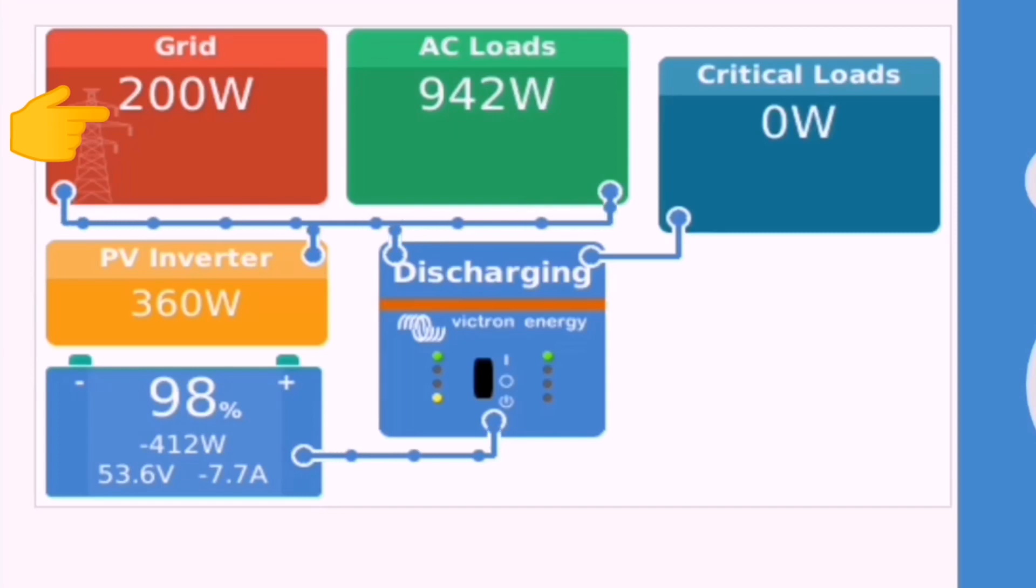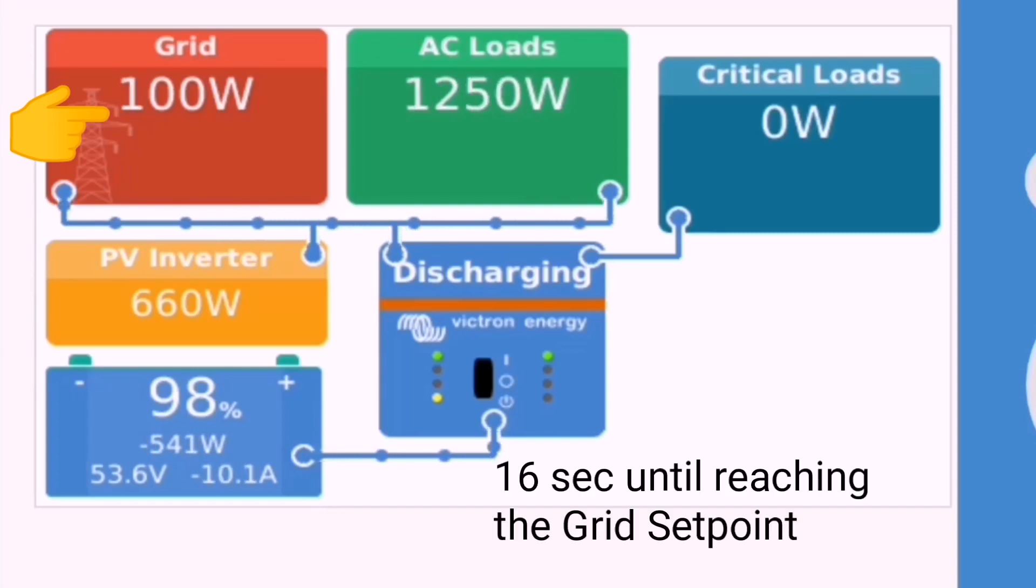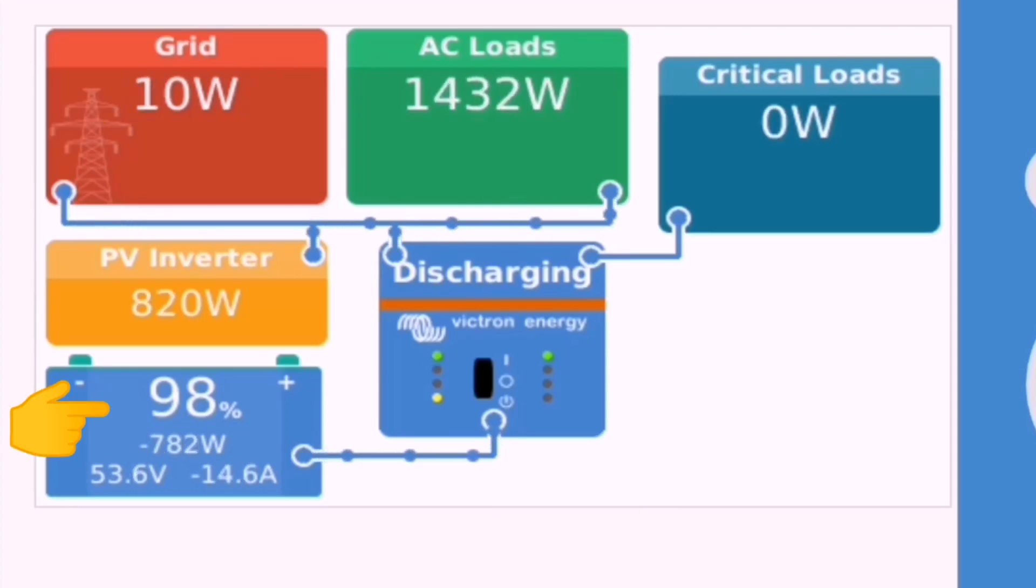What we can see here is it starts at the 700 watts and then gradually reduces down and takes 16 seconds to get to the grid setpoint of minus 50. At this point, the battery is providing all of the extra power needed to try and balance the grid to the minus 50 grid setpoint.